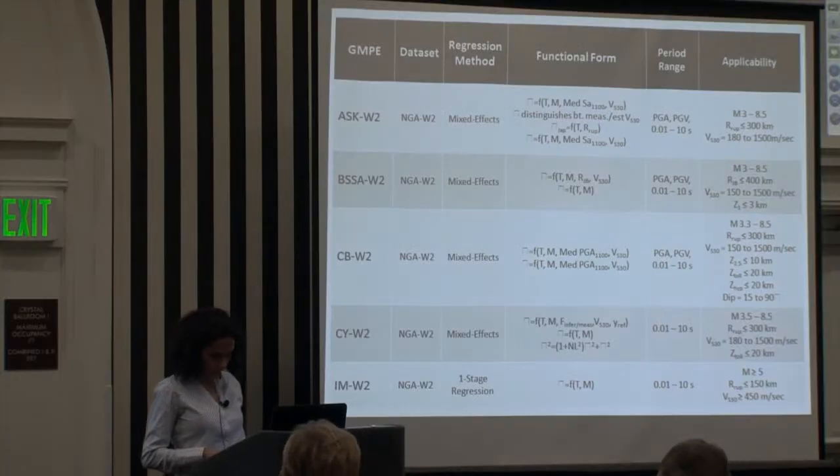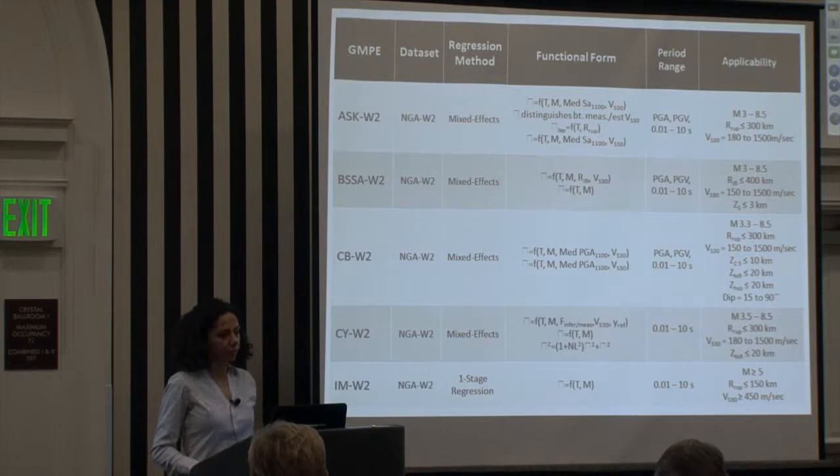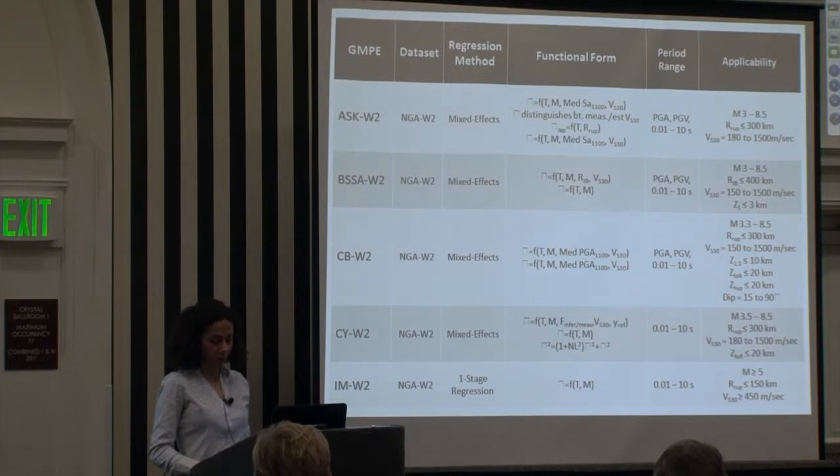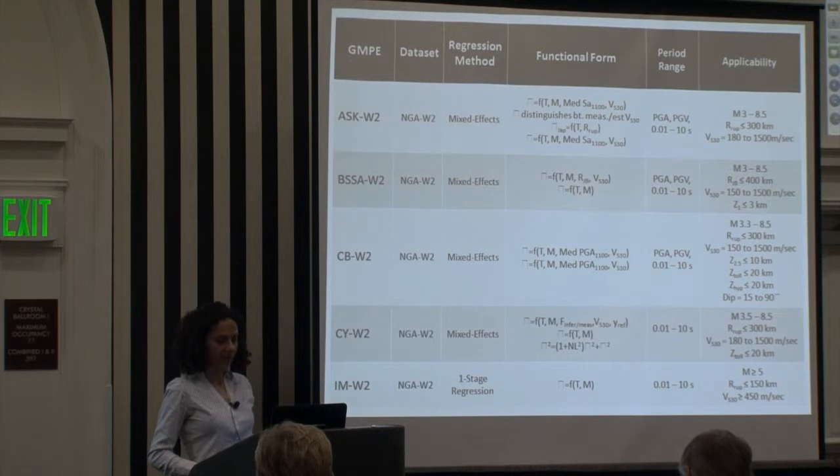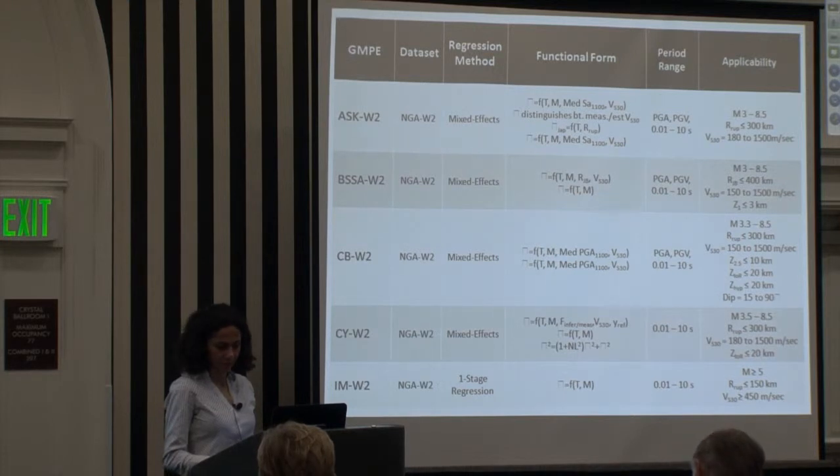One feature here with these new NGA models is they are applicable for a range of magnitude from 3 to 8.5. They apply up to distances of 300 to 400 kilometers with the exception of Idriss, and a range of VS 30 of about 180 to 1500 meters per second.